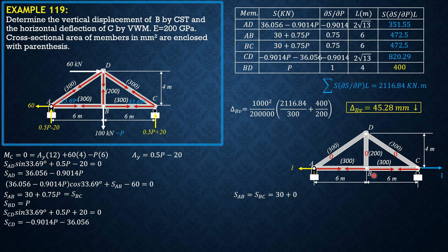So UAB is 1, UBC is also 1. So SAB is equal to SBC equals 30 plus 0.75 of 100. Remember P is 100, so SAB equals SBC equals 30 plus 0.75 of 100, and that is 105 kilonewtons.